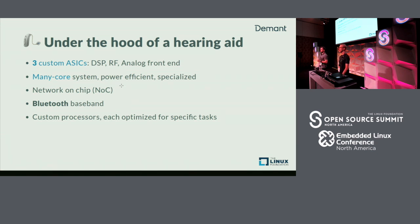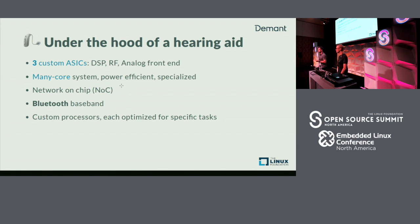A network-on-chip, as opposed to a bus-based system, is a routed network on the chip, just like your Ethernet. This enables lower power, helps with routing congestion, and helps with timing closure. Under the hood there's also, of course, a Bluetooth baseband — that's what enables our 2.4 GHz communication. And yeah, there are a lot of custom processors.